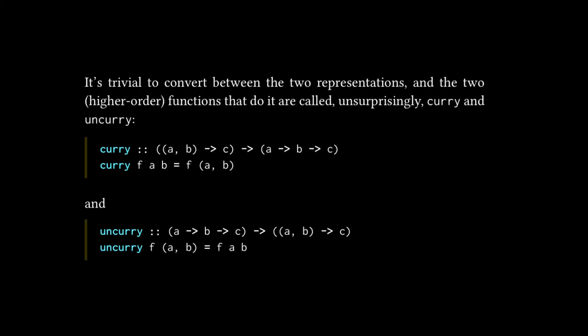And the text further goes on to say, it's trivial to convert between the two representations and the two higher order functions that do it are called unsurprisingly curry and uncurry. And so we have the two function declarations or type signatures and their definitions. But honestly, this is a bit confusing in my opinion of what these are doing. So for me, it's easier to understand this by looking at an example.